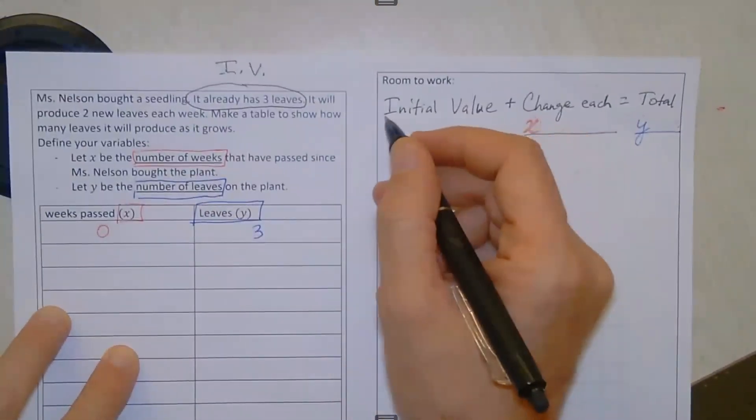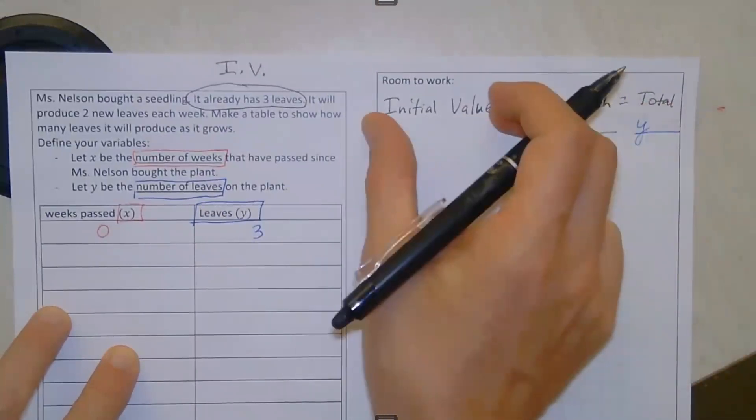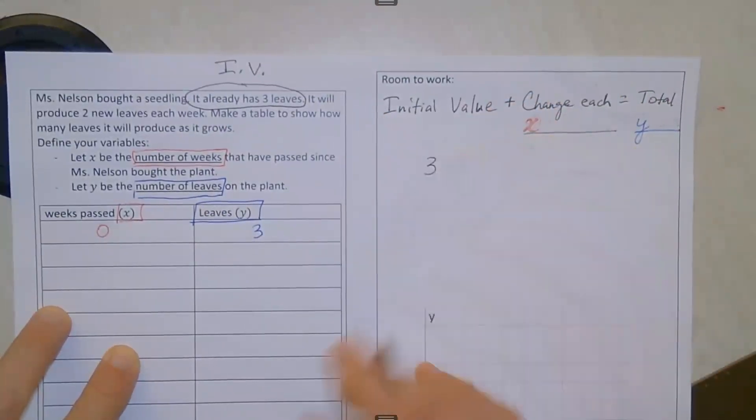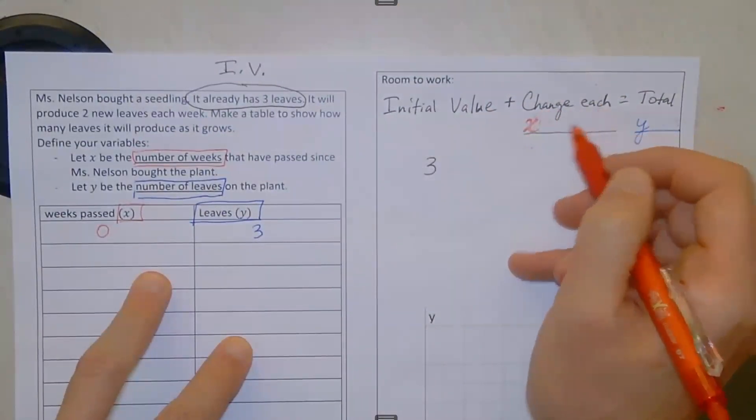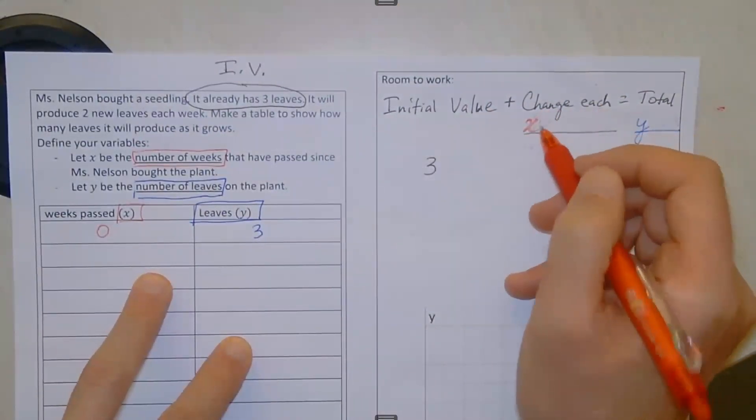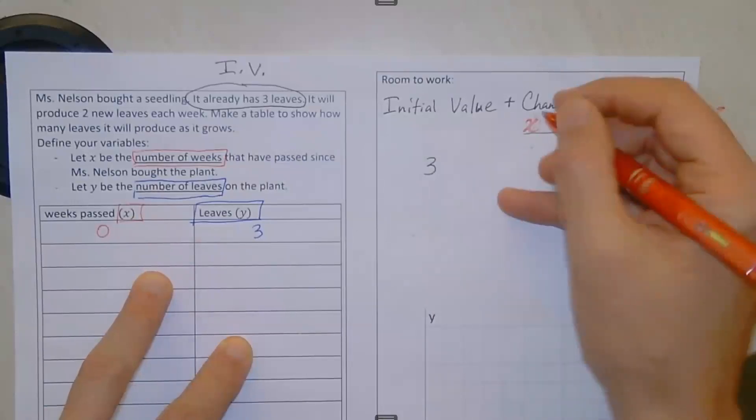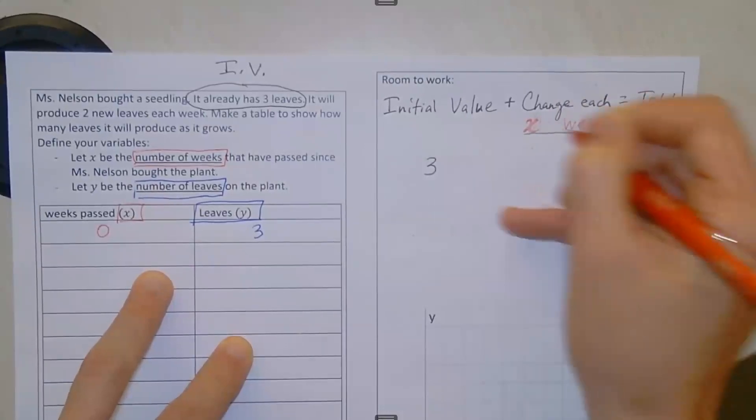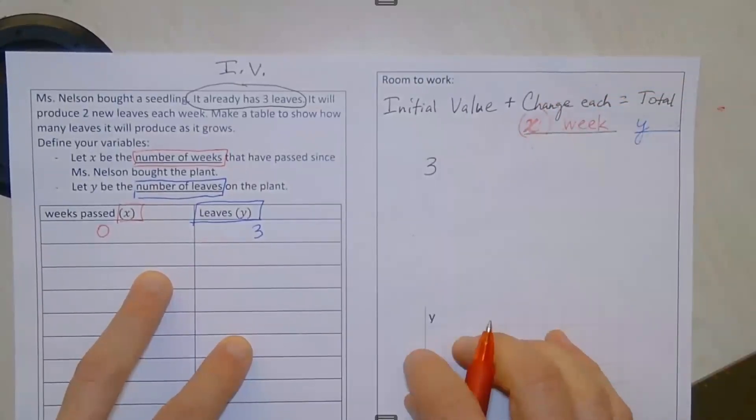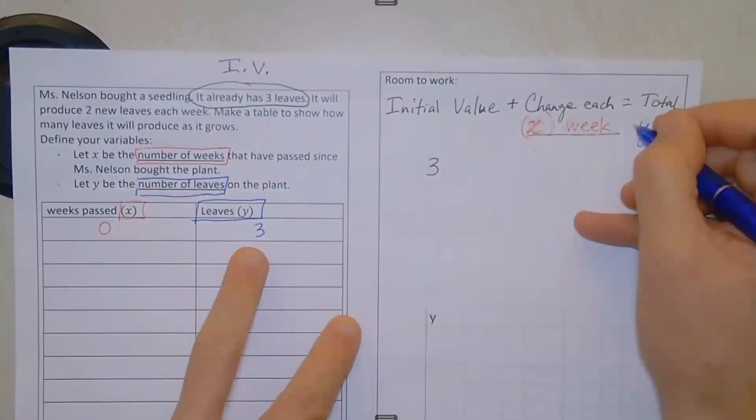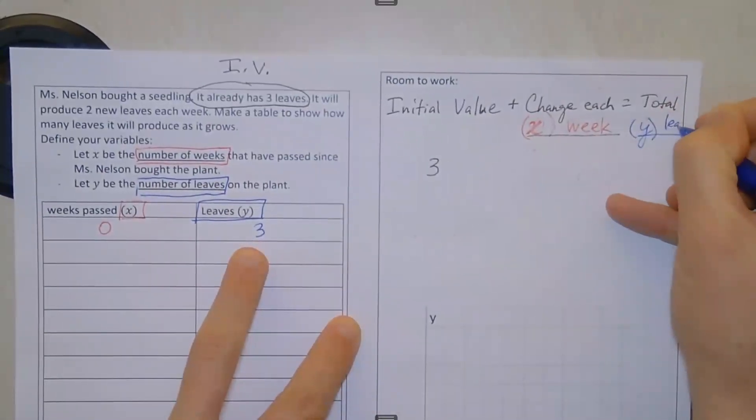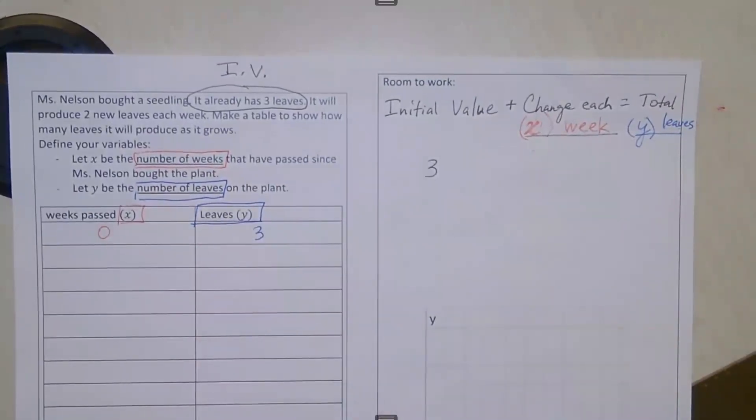So that means that in our equation, we already know our initial value is three. And the amount that the function changes for every change in X—well, X is measured in weeks. So this is change each week, and it's going to give a total number of leaves.